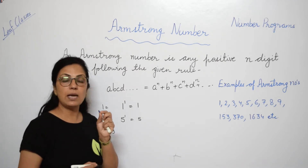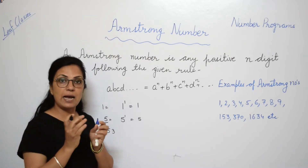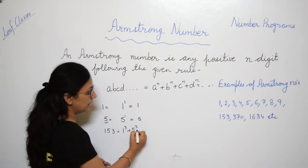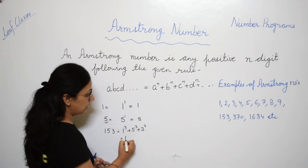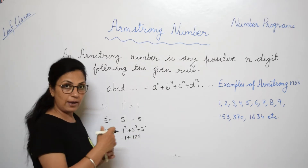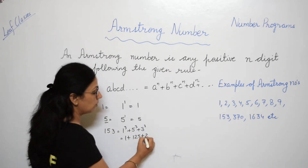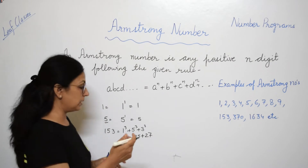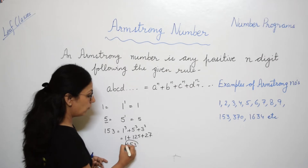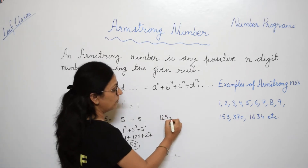For 153, we have three digits, so we find the cube of each individual digit and sum them. So 1³ + 5³ + 3³: 1 cubed is 1, 5 cubed is 5×5×5 = 125, and 3 cubed is 3×3×3 = 27. Adding these gives 1 + 125 + 27 = 153. So 153 is an Armstrong number.